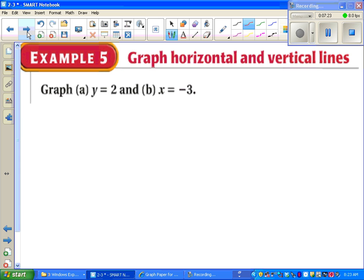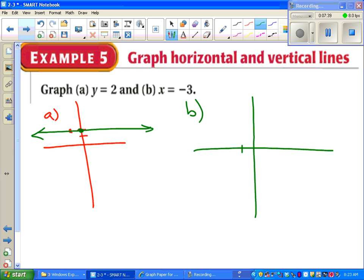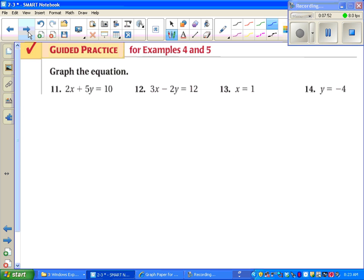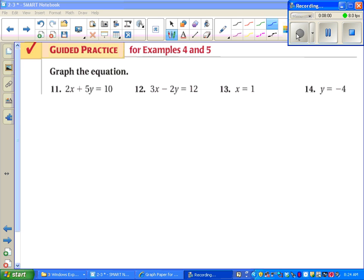So, y equals two. All we do is go where y equals two. Put a dot. Draw a line through it. Done. Part B. We want a line where x equals negative three. We go to where x equals negative three. Put a dot. Draw a line through it. Done. At this point, you can try these on your own, or you can wait and do them later. Other than that, we're done with this lesson.